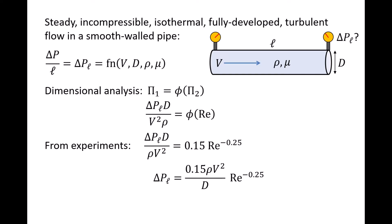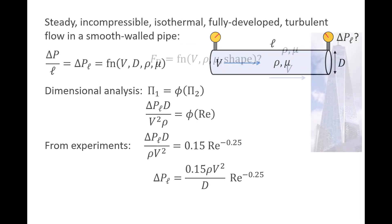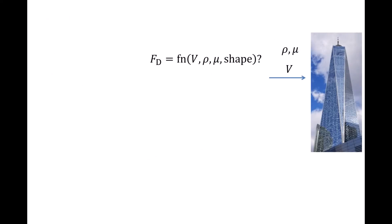If there are a small number of variables, such as in this situation where we have five variables, you usually can find the desired functional relationship between the dependent variable and the independent variables using dimensional analysis and a few experiments. However, many systems have numerous variables that impact the dependent variable. For example, if we want to find an equation to predict the drag on a large building, which we'll call fd, the flow speed V, fluid density rho, and the fluid's absolute viscosity mu should impact drag.